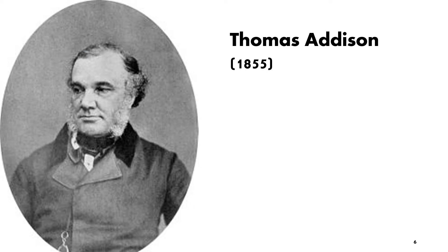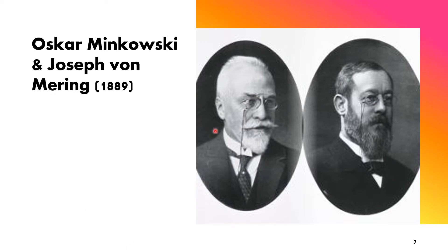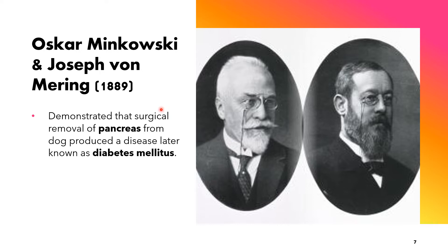One of the important figures in the field of endocrinology is Thomas Addison. He was known as the father of endocrinology, as he was the first person who discovered Addison's disease, which is an endocrine disorder. We also have Oskar Minkowski and Joseph von Mering. In the year 1889, they demonstrated that surgical removal of the pancreas from a dog produced a disease later known as diabetes mellitus.